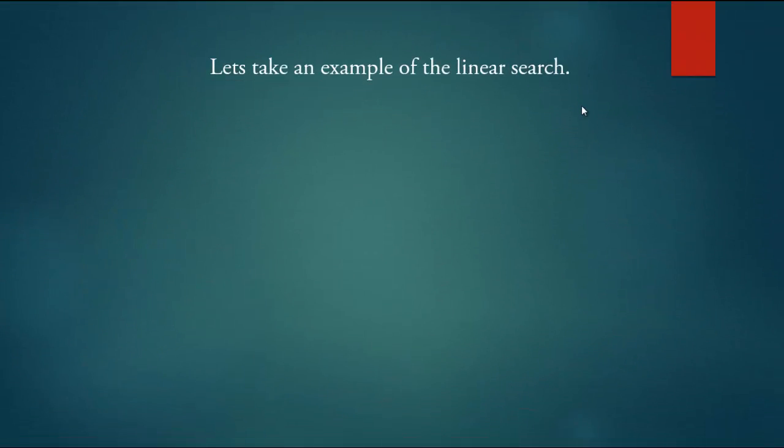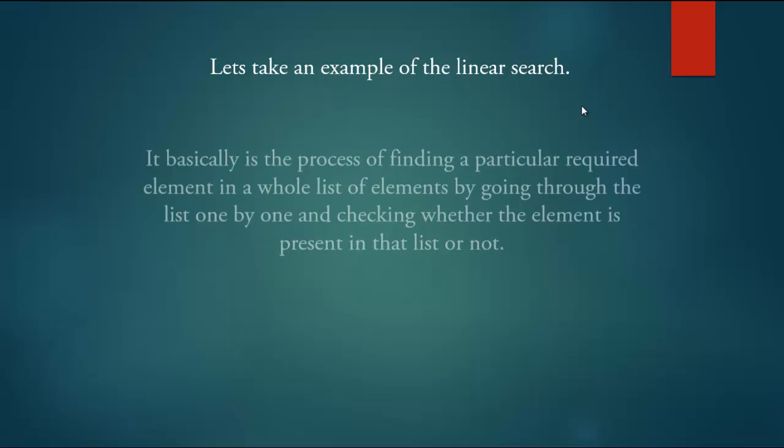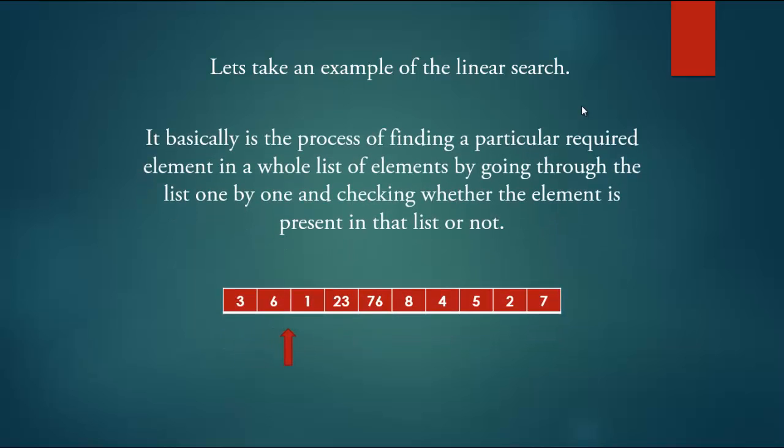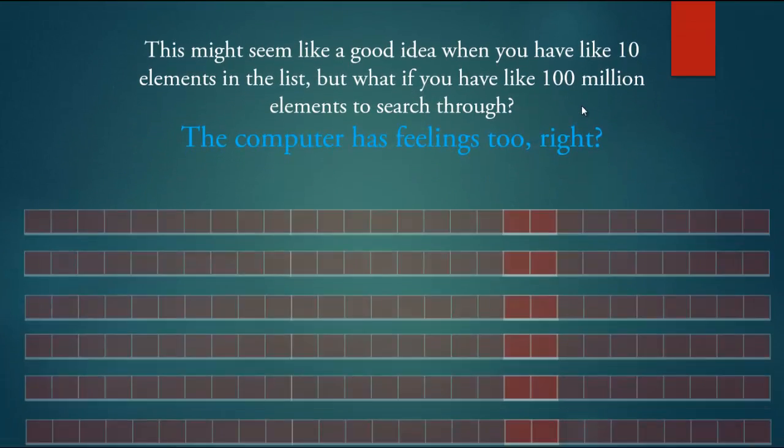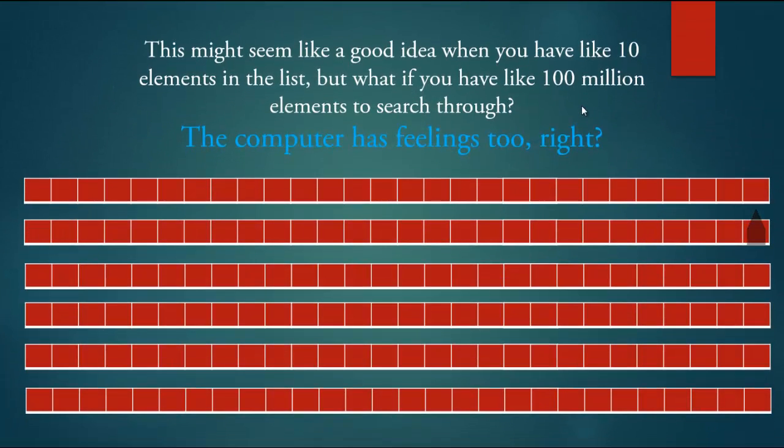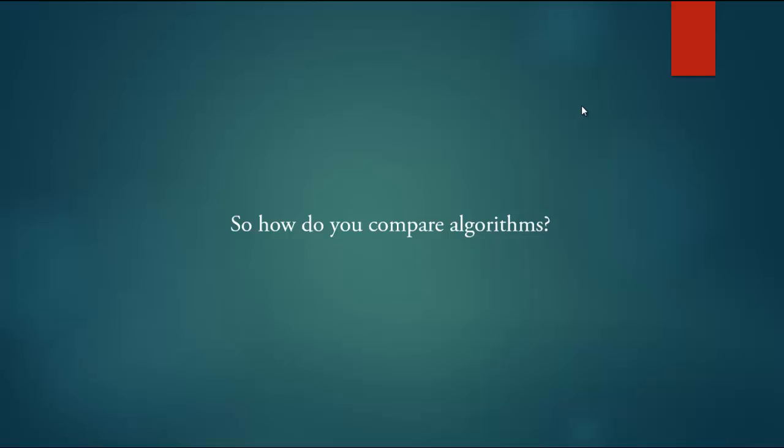Let's take an example of the linear search. It basically is the process of finding a particular required element in a whole list of elements by going through the list one by one and checking whether the element is present in that list or not. This might seem like a good idea when you have like 10 elements in the list but what if you have like a hundred million elements to search through? The computer has feelings too, right?